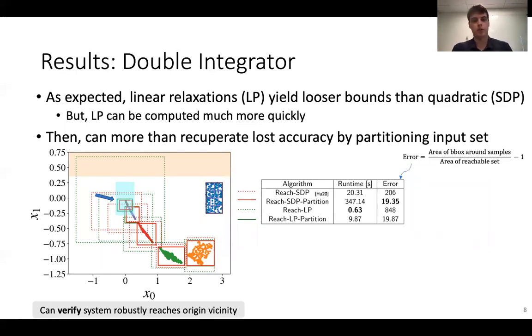In terms of numerical results, we tried this first on a double integrator system. As expected, the linear relaxations are going to yield some looser bounds than the quadratic relaxations. But this unlocks a little bit of extra computation time to allow us to do things in addition to just solving a single version of the linear program. In particular, we can recuperate the lost accuracy by partitioning the input set, which I described on one of the previous slides. This picture describes what's going on.